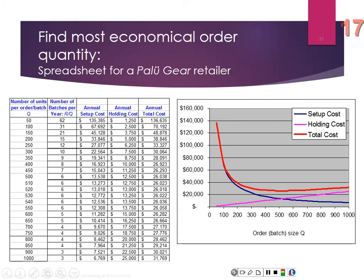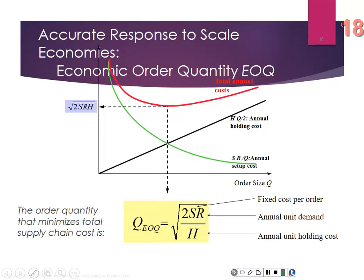The lowest total cost occurs at the point where setup costs and holding costs are equal to each other. So I set those equal and solve for Q — that gives us the economic order quantity (EOQ): the square root of 2 times cost per order times annual demand divided by holding costs. That's a refresher from 343. The EOQ tells us in the perfect world what amount to hold for the lowest total cost.